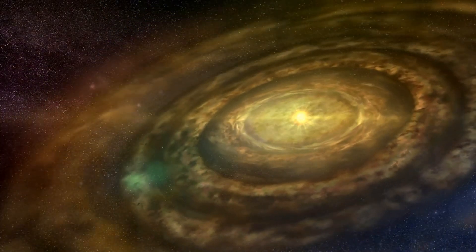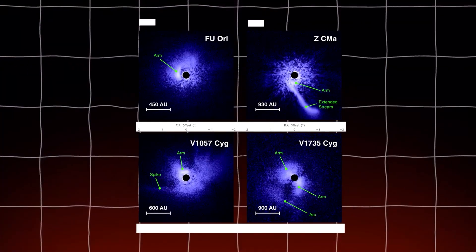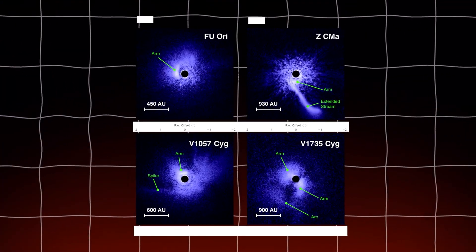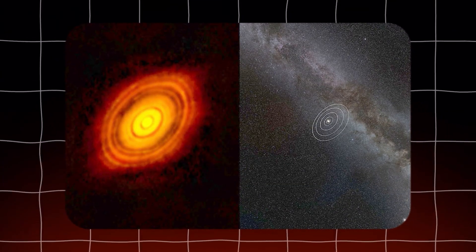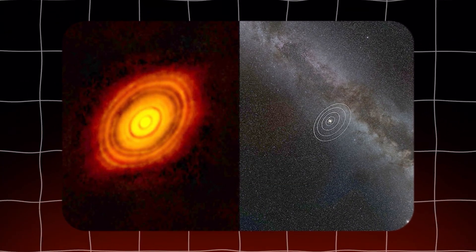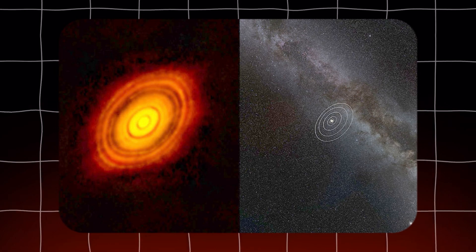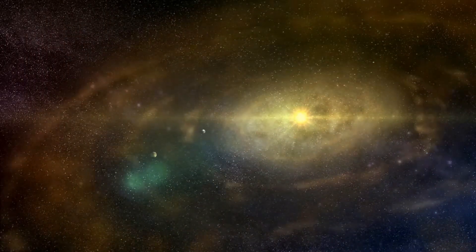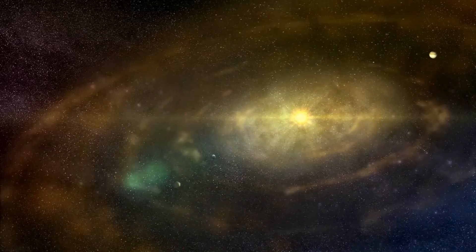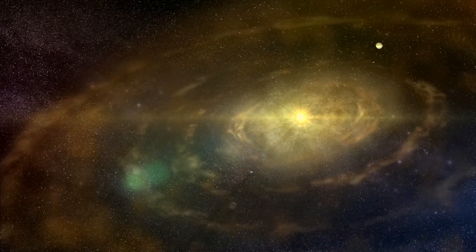Even beyond our solar system, this pattern holds true. Observations of other planetary systems show a similar alignment of planets in a single plane. The young star system around HL Tauri, with its clear disk and forming planets, provides a snapshot of this universal process. This alignment is not just a local phenomenon, but a fundamental aspect of planetary formation across the universe.